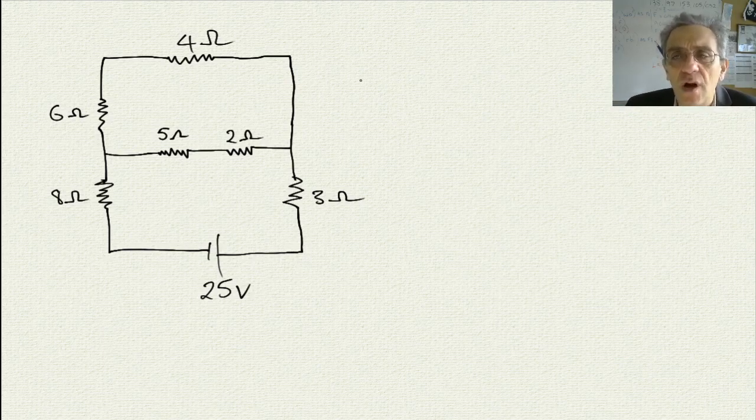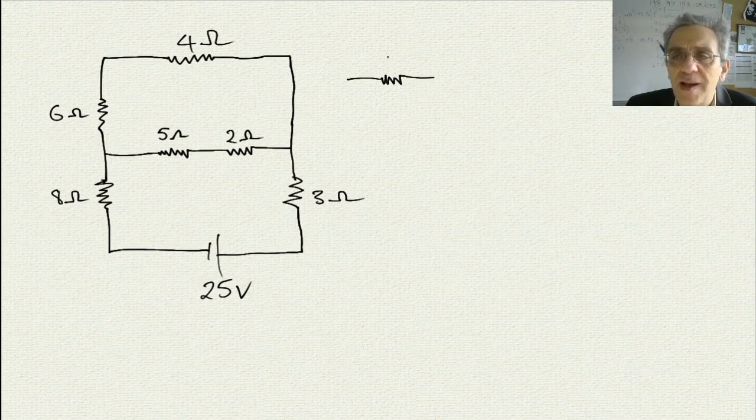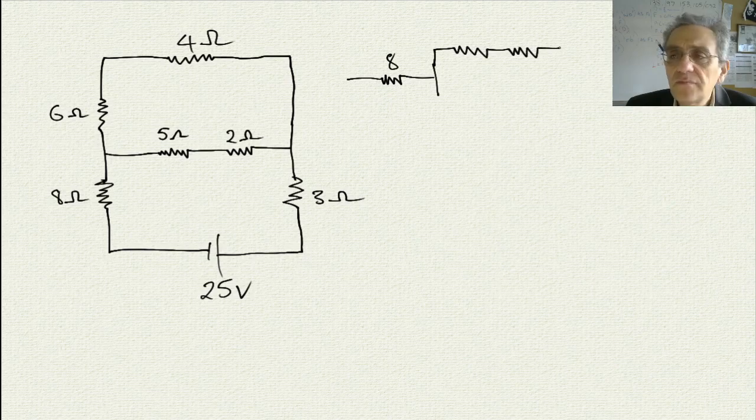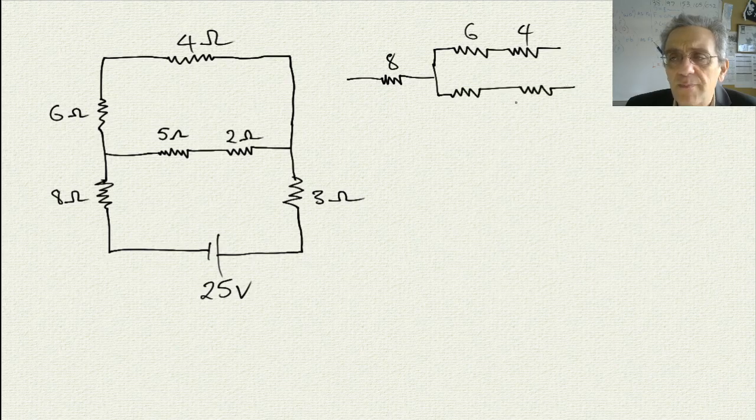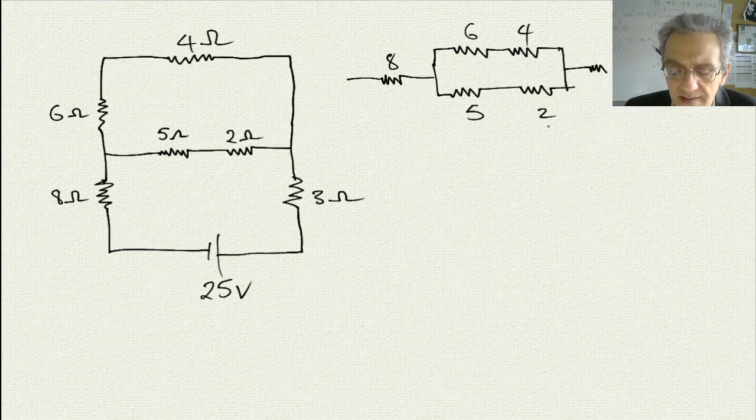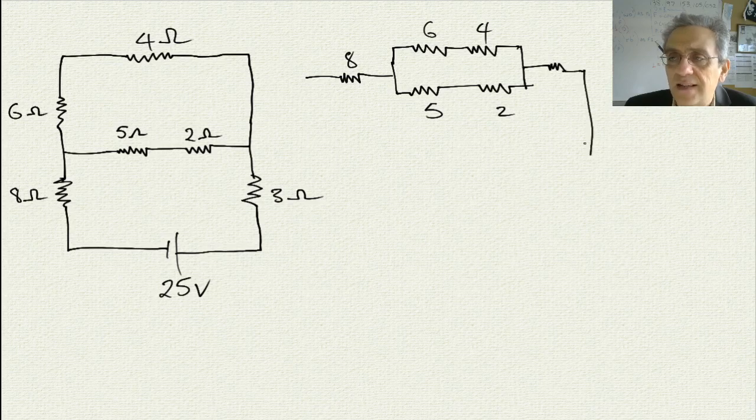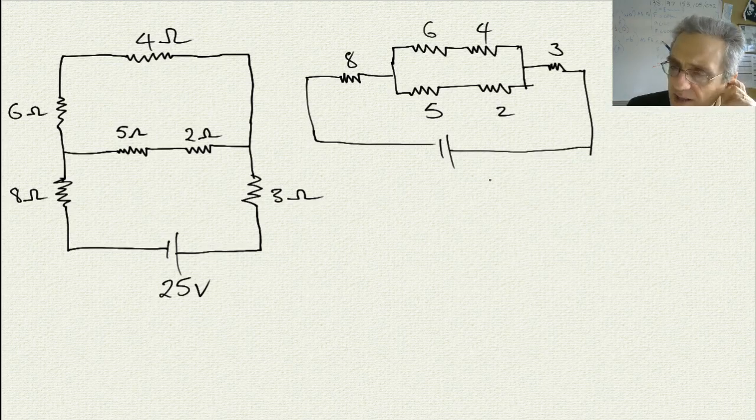The complication here is that we have the 3 and the 8 ohm resistor on either side of the parallel. So we can go ahead and redraw this. There's my 8, and then I split it up into my 6 and my 4, and then my 5 and my 2 is also in parallel to those two, and then I also have my 3 on the end. That's the whole circuit, the equivalent of it.